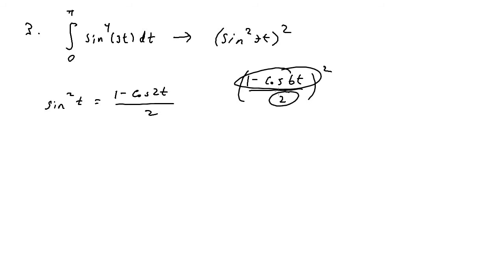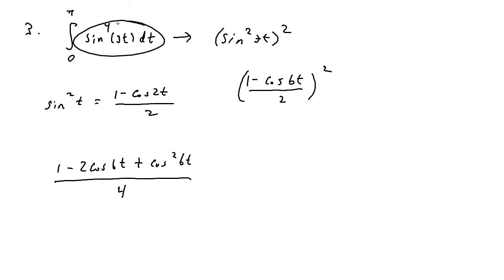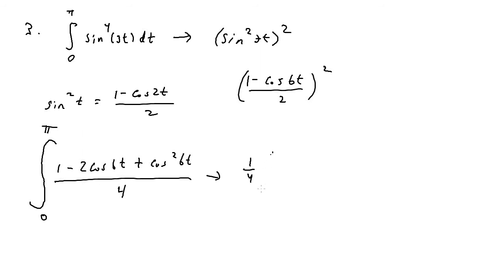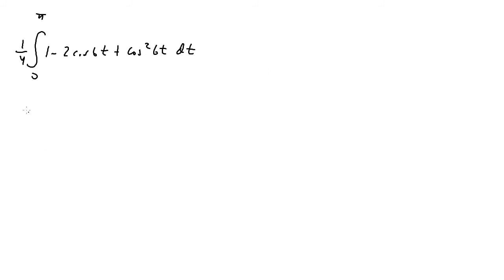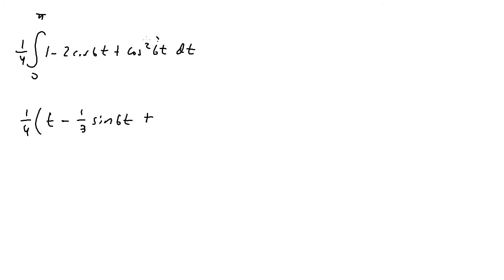When I square it, I foil the numerator and square the denominator. Foiling one minus cosine six t squared gives one minus two cosine of six t plus cosine squared of six t, over four. Taking one over four outside the integral, we have one over four times the integral from zero to pi of one minus two cosine of six t plus cosine squared of six t, dt. Integrating term by term: one integrates to t, and two cosine of six t integrates to one third sine of six t.